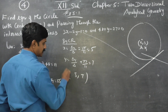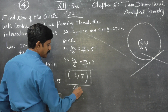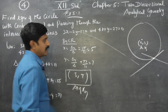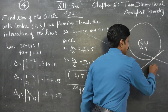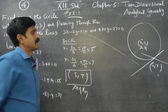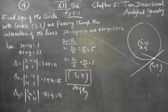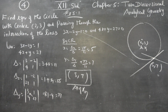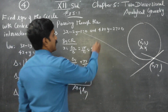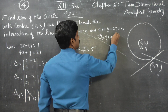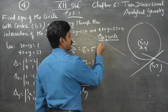Therefore my point of intersection is (5, 7). This is my point of intersection. I have found this point: (5, 7). Now they are asking for the equation of the circle. The equation of circle formula is: (x minus h) squared plus (y minus k) squared equals r squared.